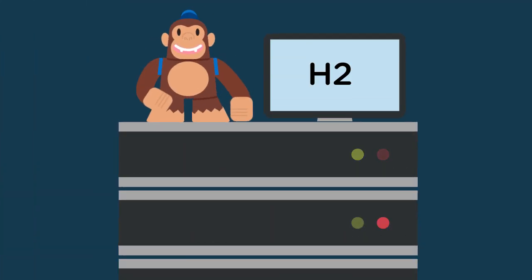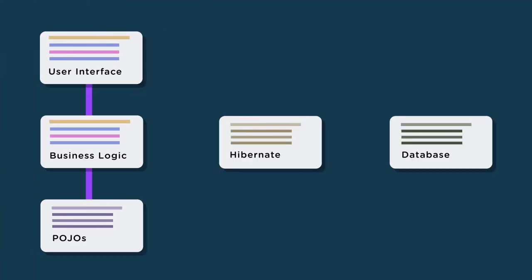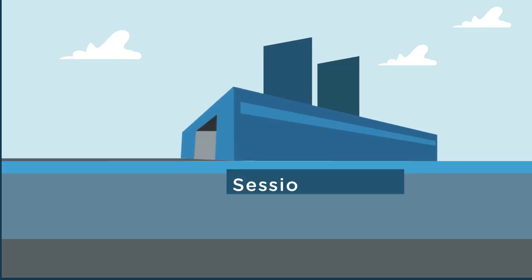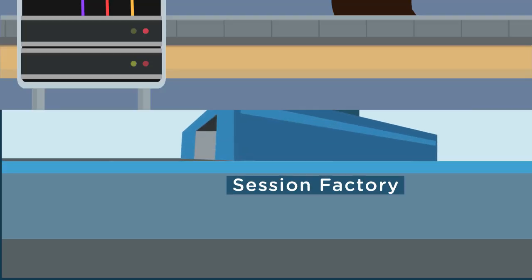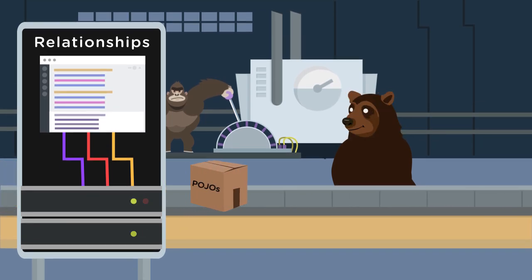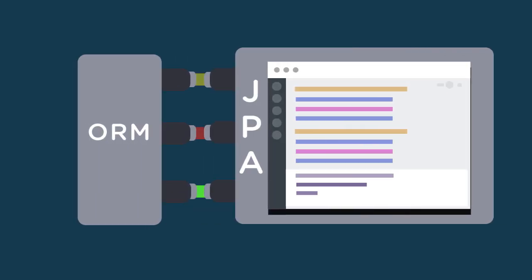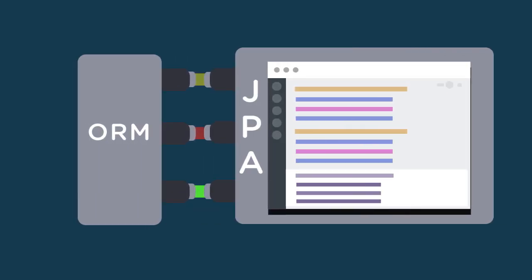We'll talk about how to connect databases using Java, how to execute raw queries, and even try our hand at mapping the results we get back from our database to Java objects ourselves. As the crowning achievement of this course, we'll finish by incorporating Hibernate into a Contact Manager application, touching on all the entry-level concepts of learning to use an ORM.